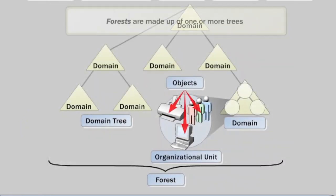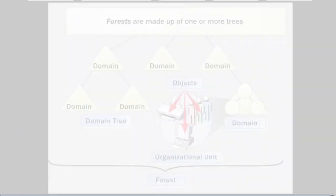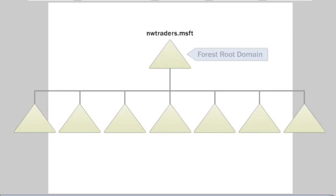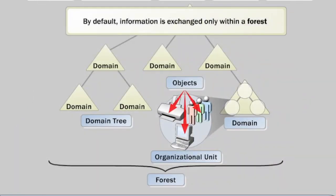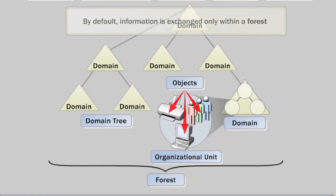Forests are made up of one or more trees. The first domain in the forest is called the forest root domain, and the name of that domain is used to refer to the forest — in this example, NWTraders.msft. A forest contains an entire instance of Active Directory. By default, information is exchanged only within a forest, making the forest a security boundary for all of the information in Active Directory.